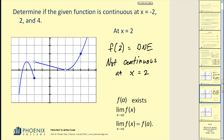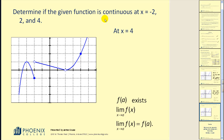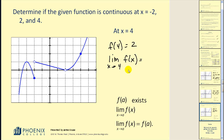Now let's look at x equals 4. Does f of 4 exist? It does — it looks like it would be equal to positive 2. Next we consider the limit of this function as x approaches 4. As we approach 4 from both the right side and the left side, we can see that we are approaching this closed point, so this limit will be equal to positive 2.